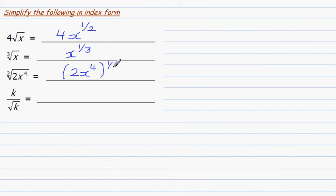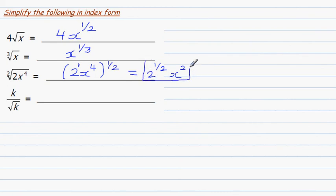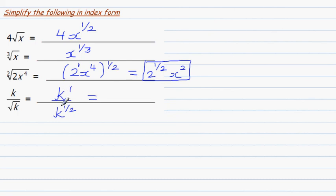To write 2x to the power 4, raised to the half, in index form: simplify by multiplying the powers — 2 raised to the half, and 4 times half gives x to the power 2. So the index form is 2 raised to the half, times x squared. For k to the power 1 divided by k to the power half, subtract the indices: 1 minus a half equals a half, giving k to the power half.